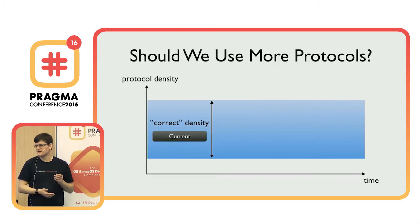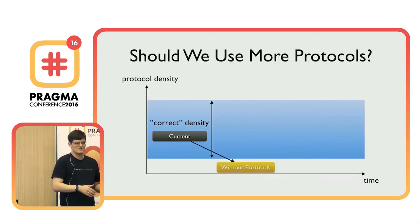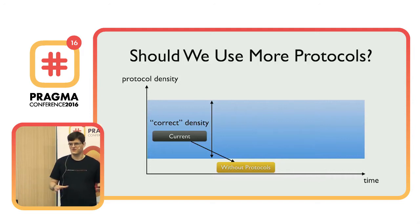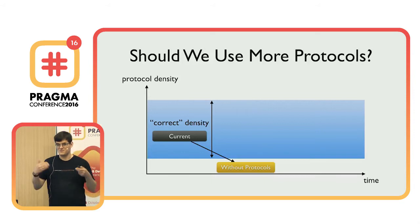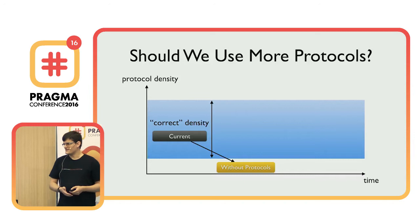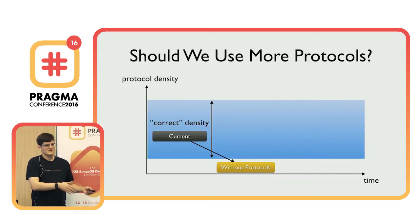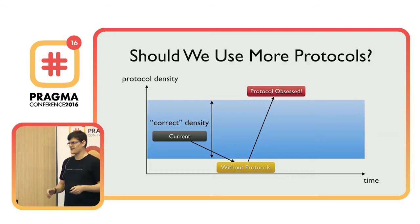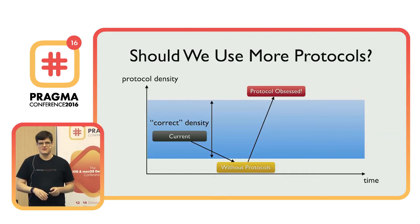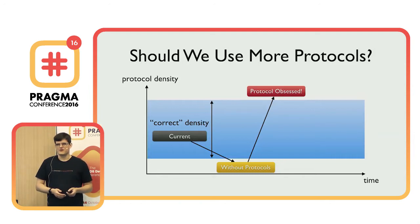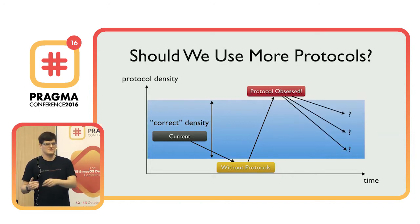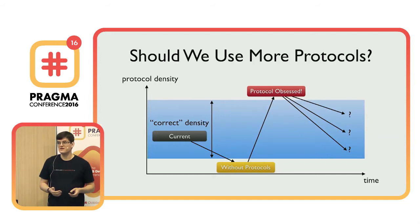For that, we look at two examples. First, an example in Swift — I actually converted all the code to Swift 3 yesterday — without protocols at all, to find out how few protocols are definitely not too many. Then we go to the other extreme: protocol obsession, putting protocols in everything where possible, trying not to use concrete types. Hopefully this gives us some orientation.